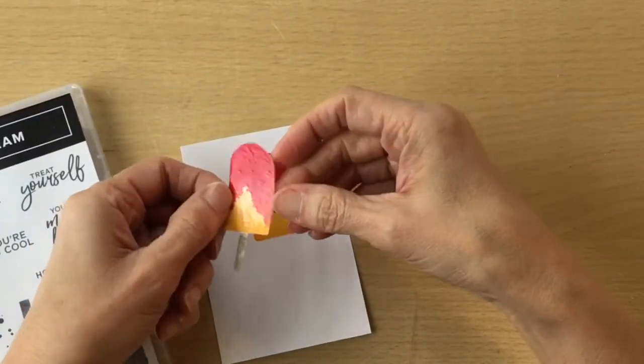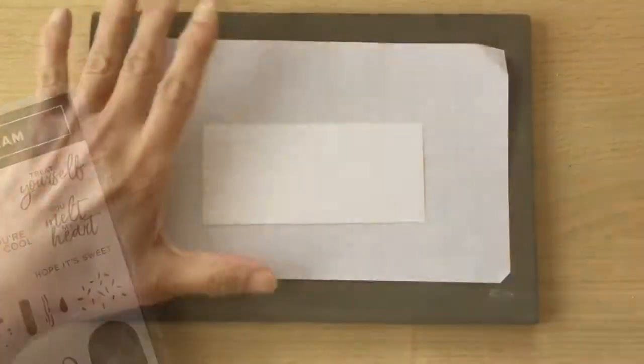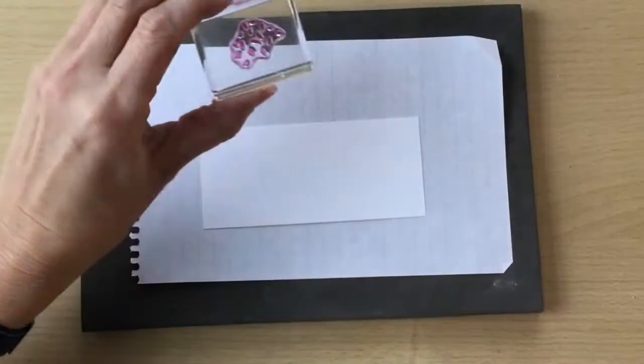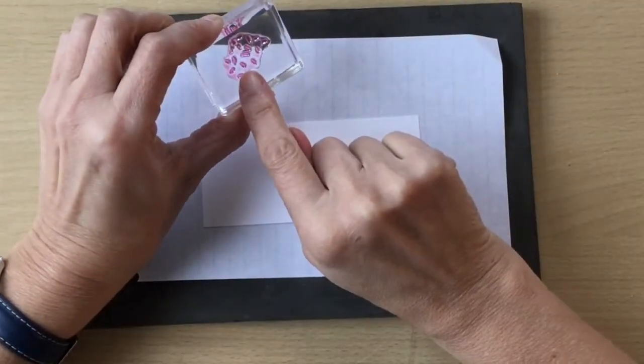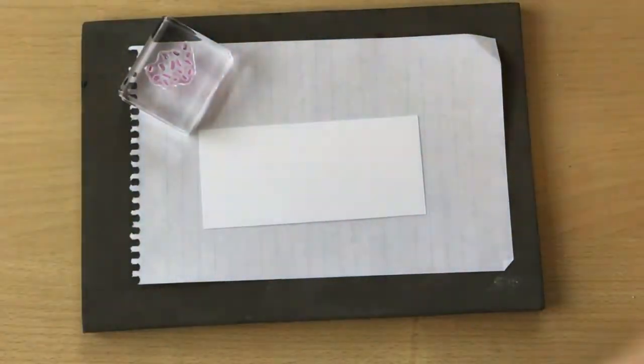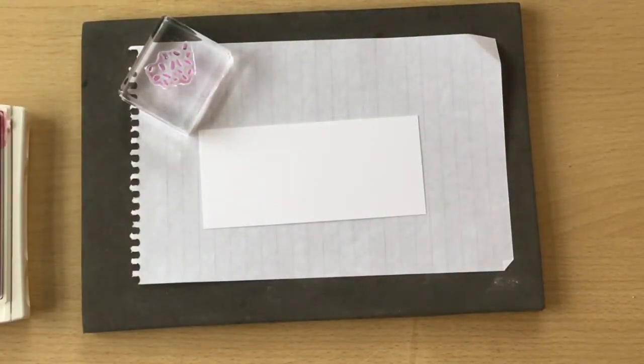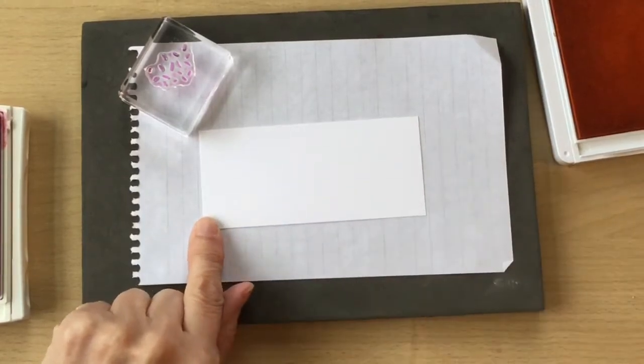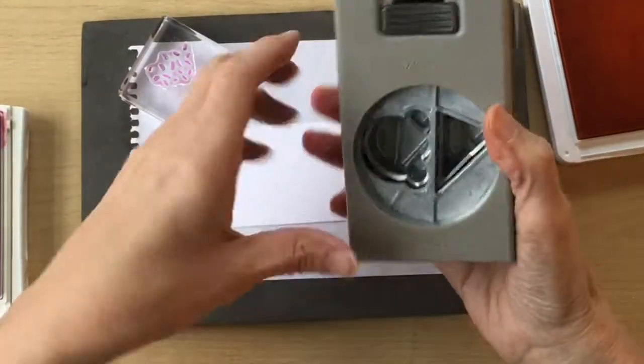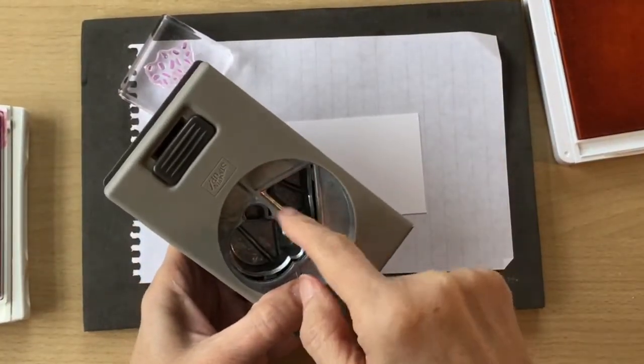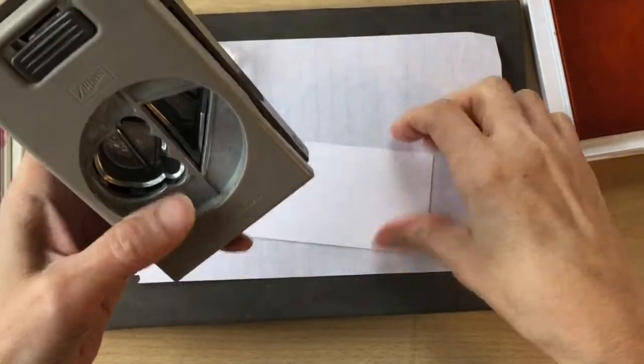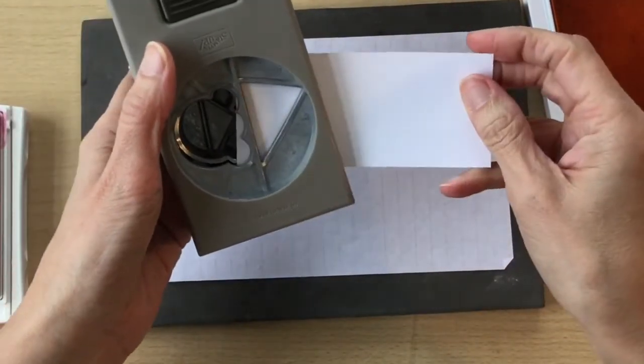I'm going to do some more stamping. I'm using the hundreds and thousands stamp and I'm going to be using the Melon Mambo and the Mango Melody. I have a piece of Whisper White cardstock and you just need to make sure that your triangle, your cone, will fit into this.